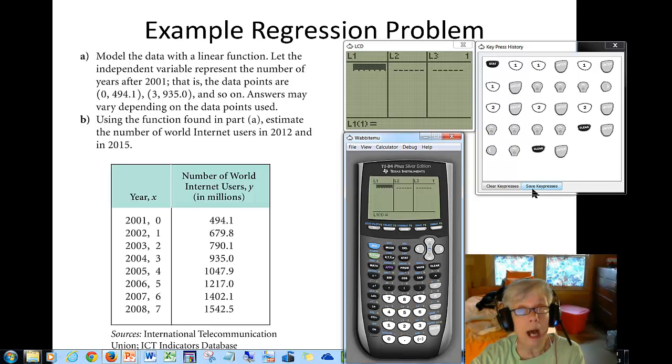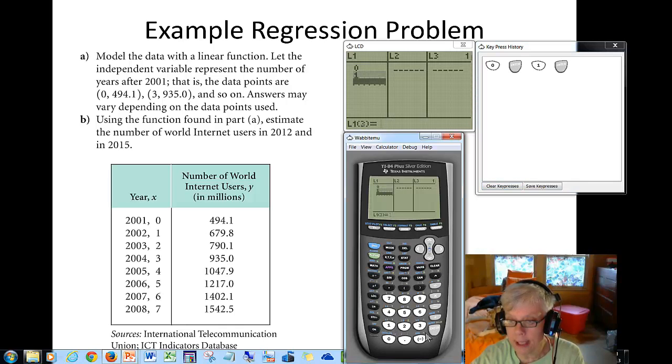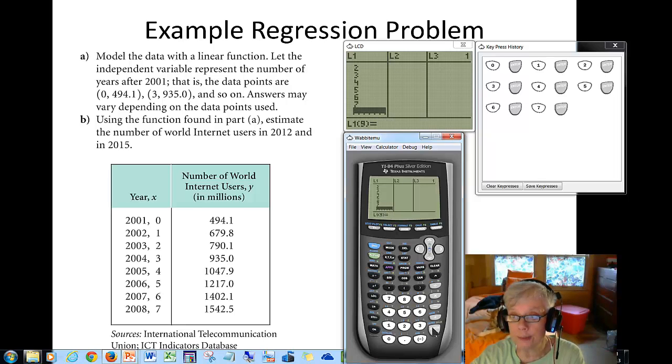Now you're back. I am going to enter in my data. I'm going to put in the L1 data first. Notice that L1 is really the letter x - these are the years. If you were making x and y points, these would be the points (0, 494.1), (1, 679.8), and so on. What we really have here is a t-table. I'm going to put in all of my x coordinates right here, 0 through 7. Here we go: 0 enter, 1 enter, 2 enter, 3 enter, 4 enter, 5 enter, 6 enter, 7 enter.